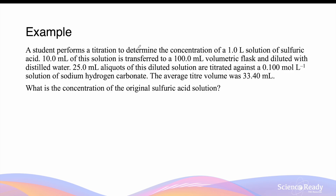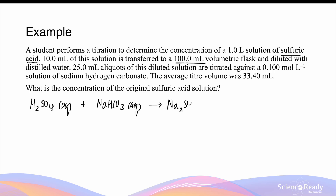A student performs a titration to determine the concentration of a 1 litre solution of sulfuric acid. 10 mL of the solution is transferred to a 100 mL volumetric flask and diluted with distilled water. 25 mL aliquots of this diluted solution are titrated against a 0.1 mol per litre solution of sodium hydrogen carbonate. The average titrate volume was 33.4 mL. We write a balanced chemical equation for the neutralization between sulfuric acid (H₂SO₄) and sodium hydrogen carbonate — keep in mind that sulfuric acid is a diprotic acid. This produces sodium sulfate, water, and carbon dioxide gas. We put a 2 in front of sodium hydrogen carbonate to have two sodiums on both sides.